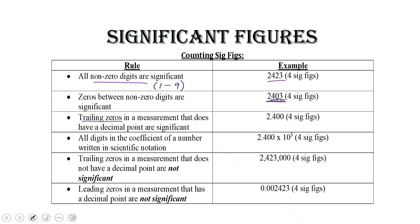Trailing zeros in a measurement that has a decimal point are significant. So if I've got 2.400, this means that my instrument can read all the way out to the third decimal place — it's just that this is an exact value, and those zeros on the end are holding the place to show that my instrument is precise. All digits in the coefficient of a scientific notation number are significant. So 2.400 times 10 to the 3 — all four of those digits are significant, because if it's in front of a power of 10, all of those digits can be read off your instrument.